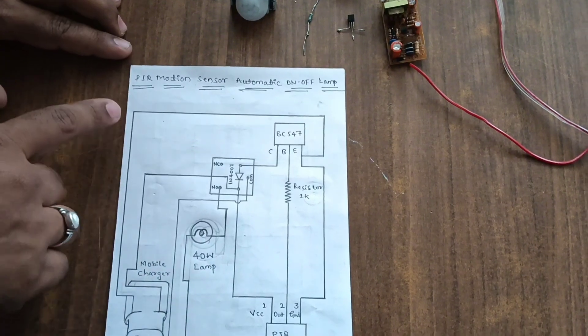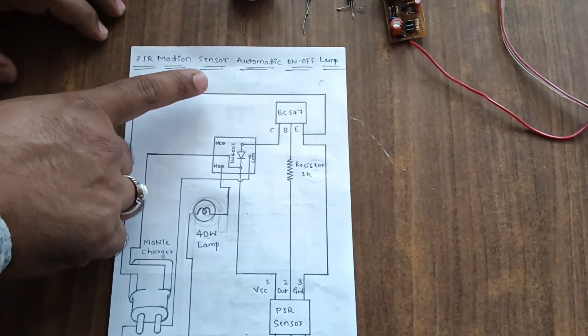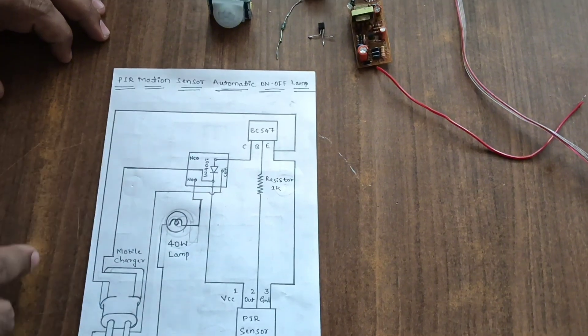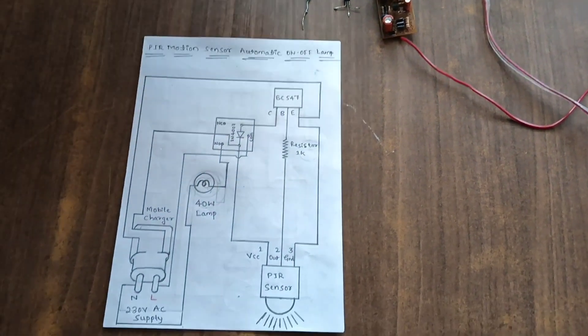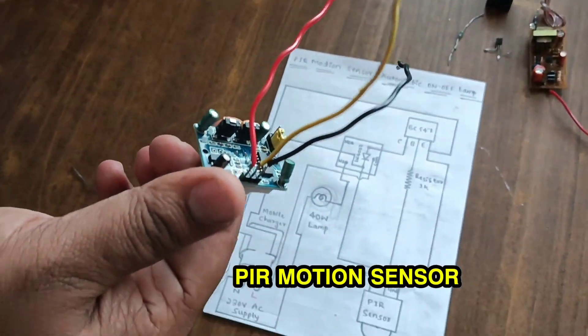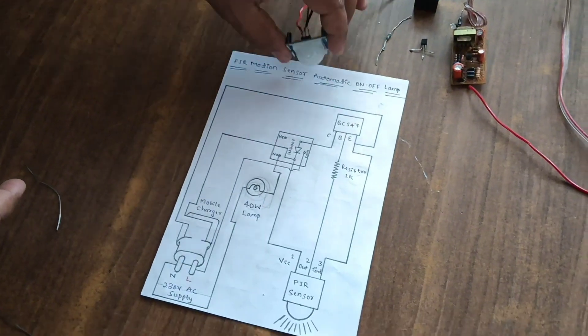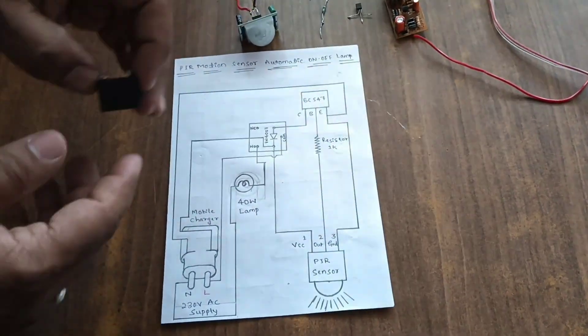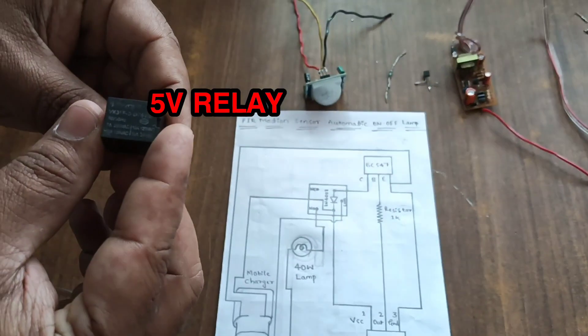Welcome to our channel. PIR motion sensor automatic on-off lamp using PIR motion sensor circuit. It uses a 5-volt relay.